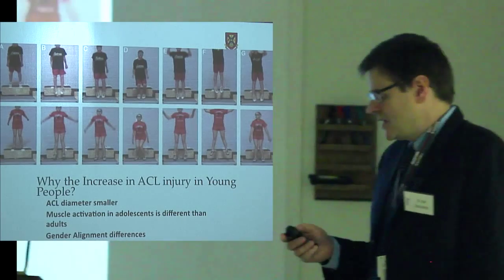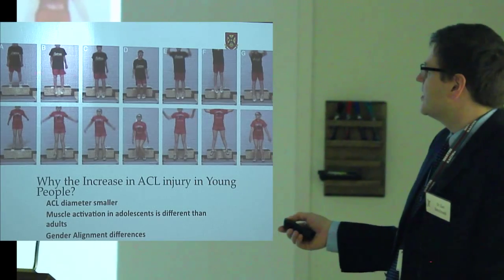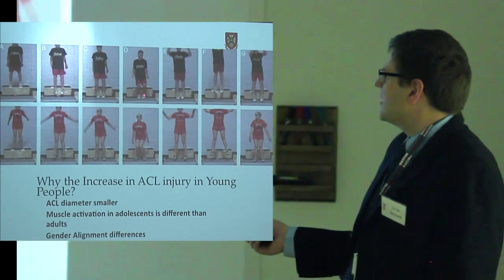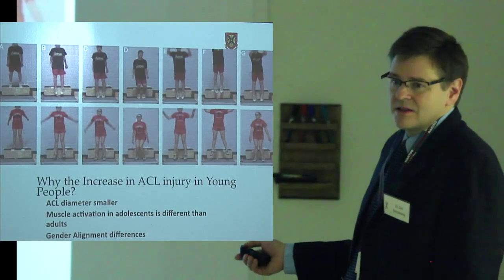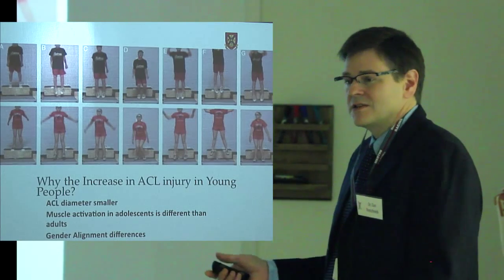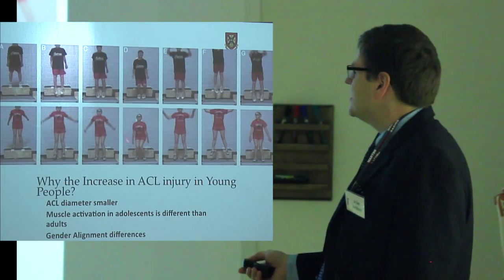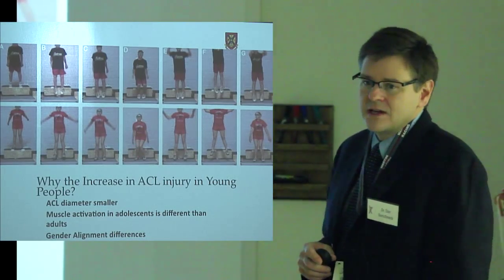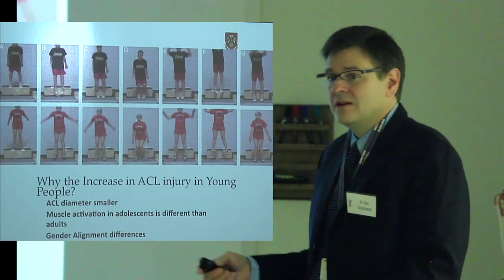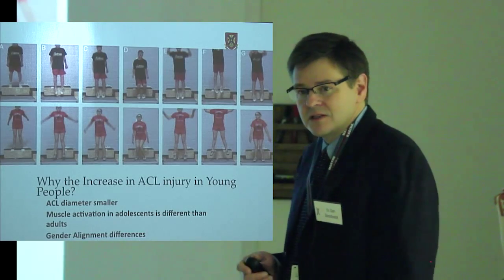So why do ACLs rupture? This slide shows two groups: a young boy dropping off a box — a drop box test — and when he lands, he lands with his knees straight. But when this young girl lands, she lands with her knees bent in the middle, knock-kneed. That's a very typical reaction in the way girls land or pivot compared to boys. That knock-knee positioning when landing is one of the reasons girls are more likely to tear their ACL. There's been lots of work trying to train young women in soccer not to take that position.